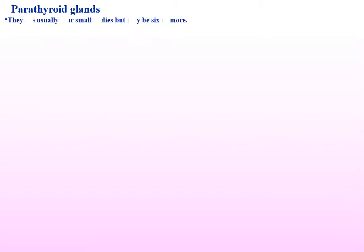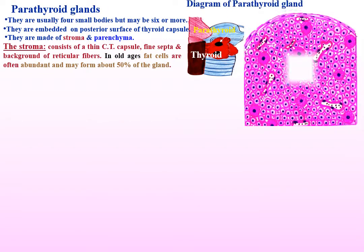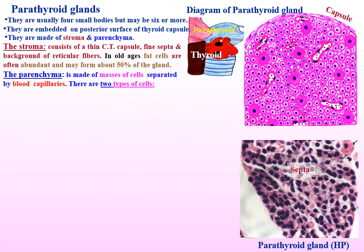Parathyroid glands: they are usually four small bodies, but may be six or more. They are embedded on the posterior surface of the thyroid capsule. They are made of stroma and parenchyma like other glands. Stroma consists of a thin connective tissue capsule, fine septa, and a background of reticular fibers. In old age, fat cells are often abundant and may form about 50% of the gland. The parenchyma is made of masses of cells separated by blood capillaries.